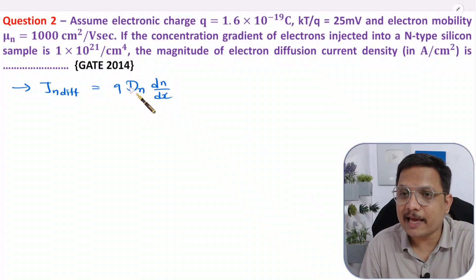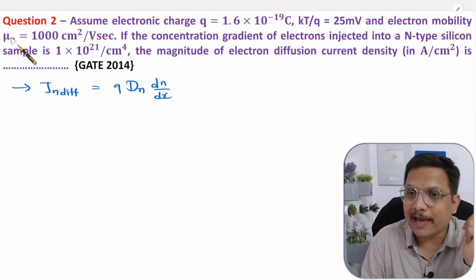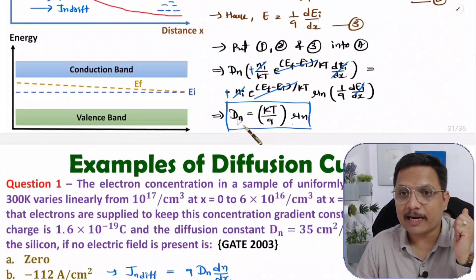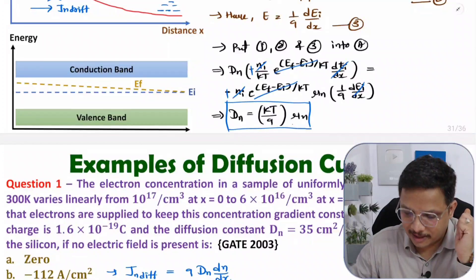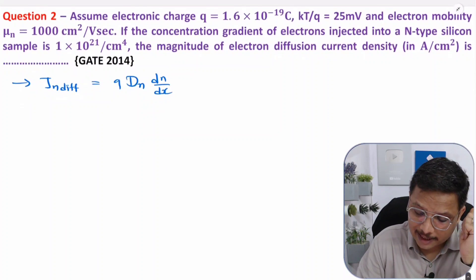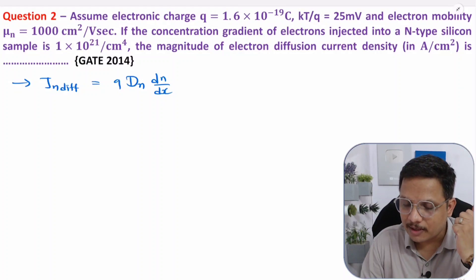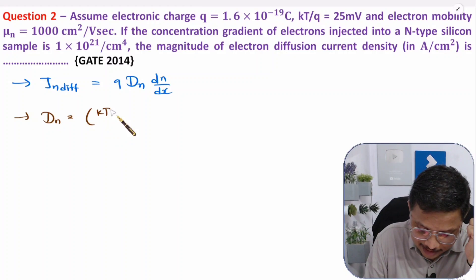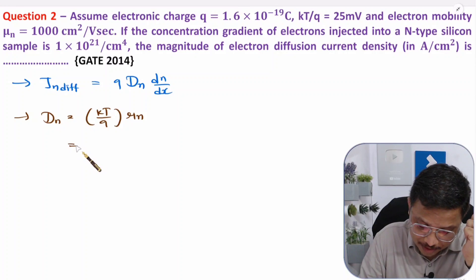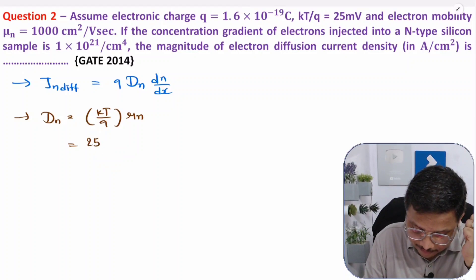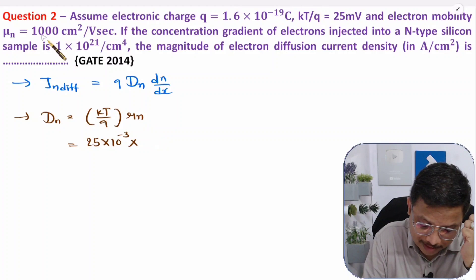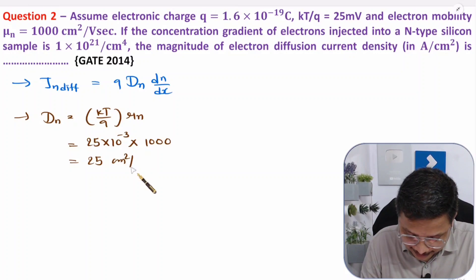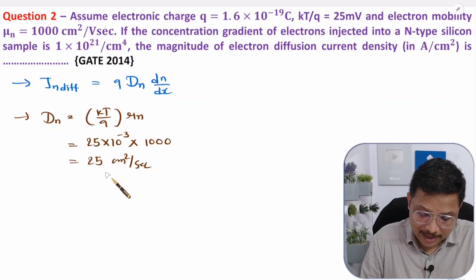The charge and concentration gradient are given, but the diffusion coefficient D_n is not given directly. D_n can be identified from μ_n using Einstein's relationship, which states D_n = (kT/q) × μ_n. Here kT/q is given as 25 millivolts and μ_n is 1000 cm²/V·s, so D_n = 25×10^-3 × 1000 = 25 cm²/s.